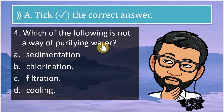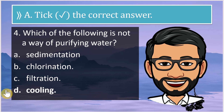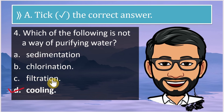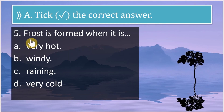Which of the following is not a way of purifying water? The options are sedimentation, chlorination, filtration, or cooling. The correct answer is cooling. Cooling is not a way of purifying water. The rest — sedimentation, chlorination, and filtration — are all ways of purifying water.